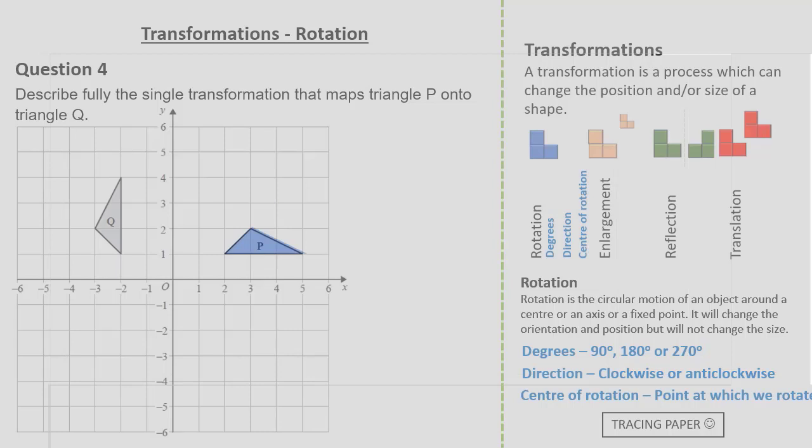Using our tracing paper let's trace shape P. And let's pick this point as our centre of enlargement. Now we are going to rotate 90 degrees anticlockwise to see if it arrives at position Q. Clearly this is the incorrect centre of enlargement. So let's try again.